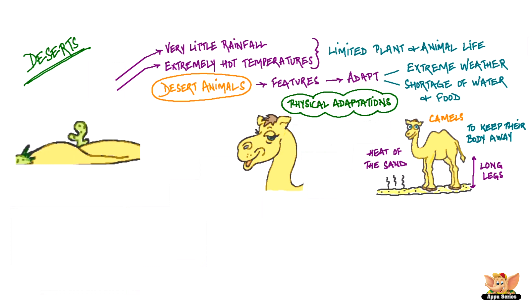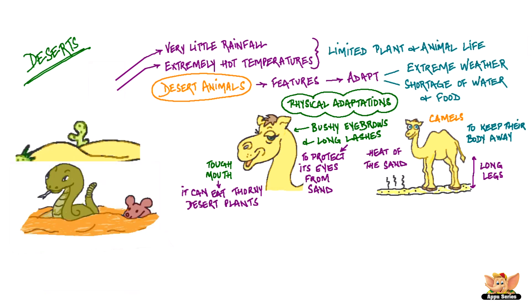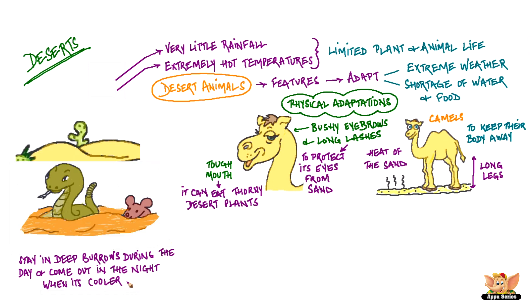For example, the camel has a tough mouth so it can eat thorny desert plants. It has bushy eyebrows and long lashes to protect its eyes from the sand. Other desert animals like rats and snakes do not have long legs like the camel. To protect themselves from the desert heat during the day, they stay in deep burrows during the day and come out only during the night when it is cooler.